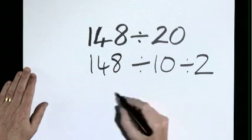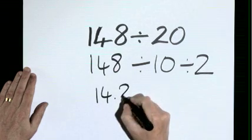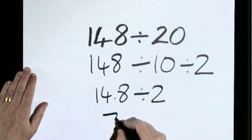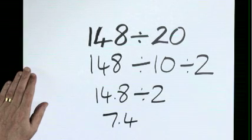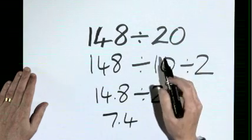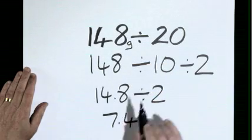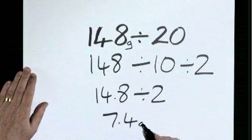148 divided by 10 is 14.8. Still to divide by 2, 7.4. So if there's 20 small sweeties and altogether they weigh 148 grams, the average weight of a sweetie would be 7.4 grams.